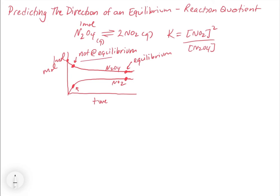Another thing we need to determine is which direction the reaction is going. From the graph we can see that when we're not yet at equilibrium, the forward reaction is preferred — we're consuming N₂O₄ and making NO₂. We need a way to figure out both whether we're at equilibrium and which direction the reaction will go, using just numbers.